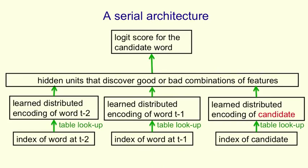One way to avoid having 100,000 different output units is to use a serial architecture. We put in the context words as before, but now we also put in a candidate for the next word in the same way as the context words. Then we go forwards through the net, and what we output is a score for how good that candidate word is in that context. Of course, we have to run forwards through this net many times, but most of the work only needs to be done once.